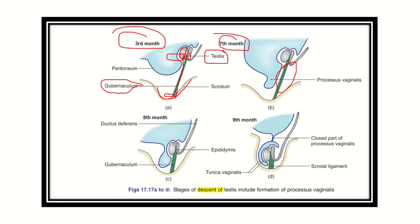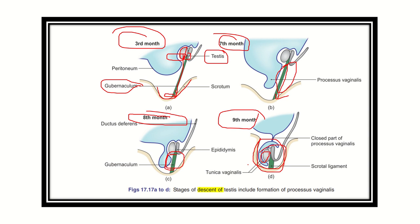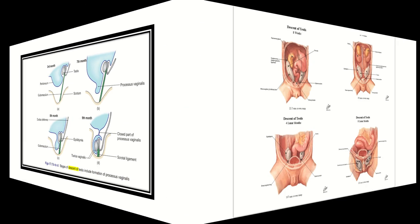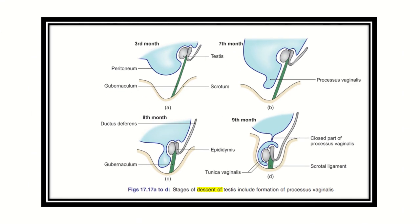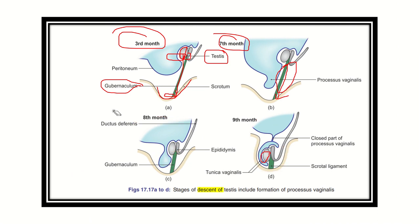The gubernaculum is shortening and it comes toward the scrotum. In the third picture, during the eighth month, the gubernaculum is even shorter and the testes are pulled toward the scrotum. In the final picture, in the ninth month of intrauterine life, the testes are fully present inside the scrotum. This is the normal descending pathway of the testes to the scrotum.